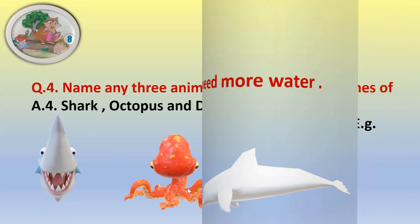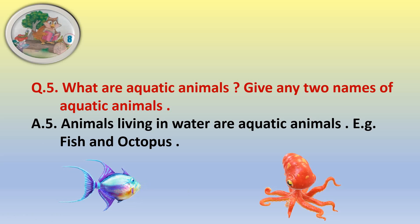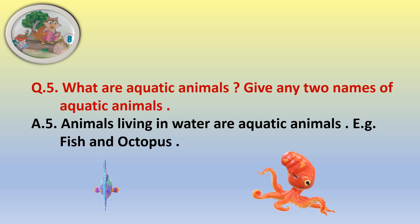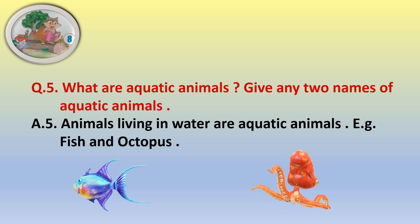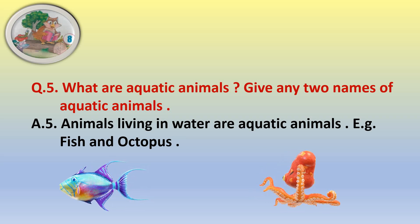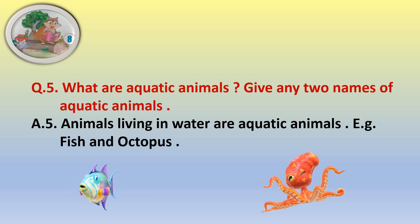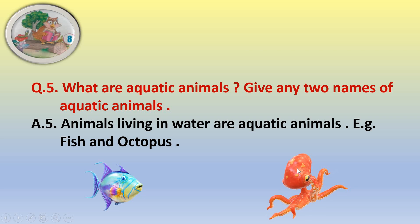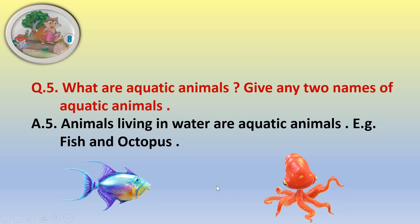Question number five: what are aquatic animals? Give any two names of aquatic animals. The answer is: animals living in water are aquatic animals. For example, fish and octopus. Octopus has eight legs.